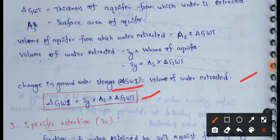The final formula: delta GWS equals specific yield Sy times As (surface area of aquifer) times delta GWT, where delta GWT is the thickness of aquifer from which water is extracted. This formula gives the change in groundwater storage.